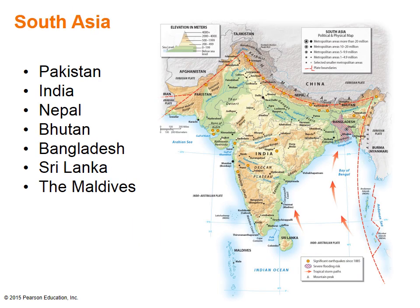The second most populous region in the world, South Asia is dominated by India, Pakistan, and Bangladesh. The two Himalayan countries of Nepal and Bhutan, along with the island nations of Sri Lanka and the Maldives, round out the region. Many of the seismically active region's landscapes are products of the slow northward movement of the Indo-Australian tectonic plate against the Eurasian plate.